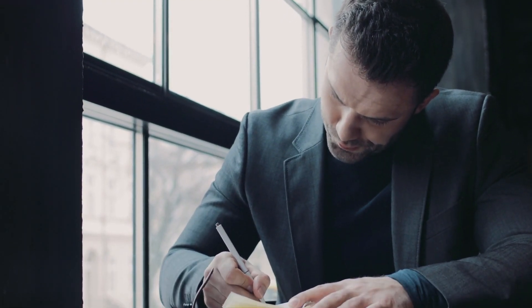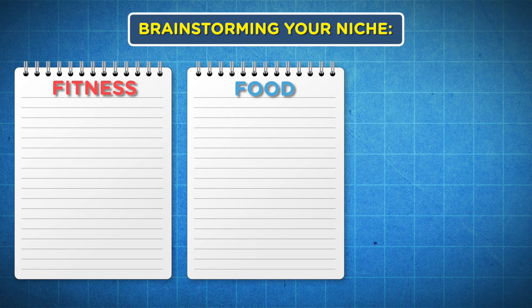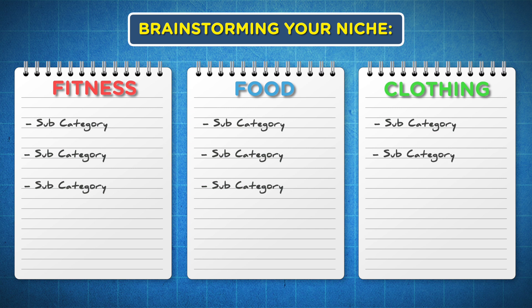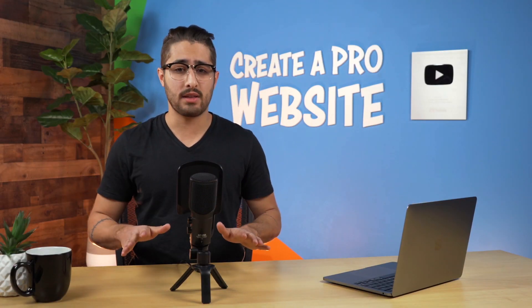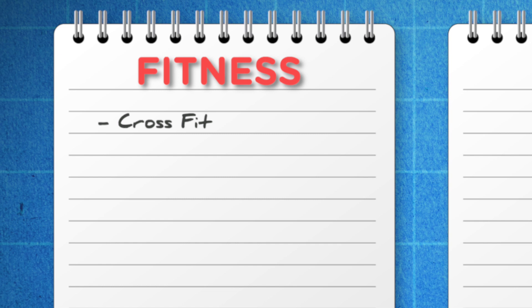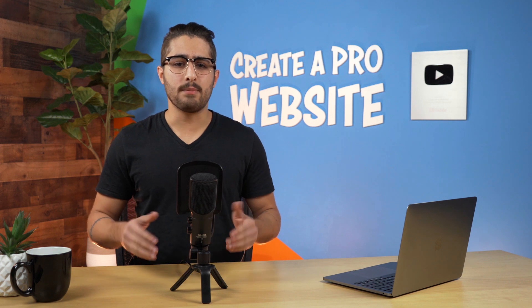Put all of your niche ideas down on a piece of paper. You might be thinking about fitness, food, or clothing. Underneath each of these categories put down all of the different subcategories or subpoints you can associate with them — essentially a content dump of everything you can think of. So under fitness you might think of CrossFit or HIIT workouts. Under food you might talk about different cuisines. Under clothing you might think of different seasons or brands. As you continue, you'll begin to notice that some categories generate subcategories much more easily than others.